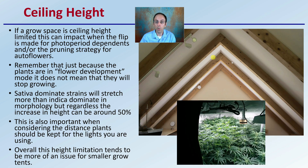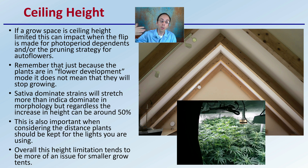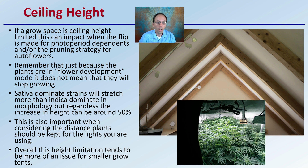Ceiling height is an important consideration. If your grow space is ceiling height limited, this can impact when the flip is made for photoperiod dependent plants and the pruning style used for autoflowers. Remember that just because plants are in flower development mode doesn't mean they will stop growing in vertical height — they still continue to grow, just not as much as in the vegetative stage. A sativa-dominant strain will stretch more than an indica-dominant morphology, and the increase in height can be around 50%. This is important when considering the distance plants should be kept from your lights. Height limitation tends to be more of an issue for smaller grow tents than actual grow rooms, but you also need to consider where the lights are hanging.